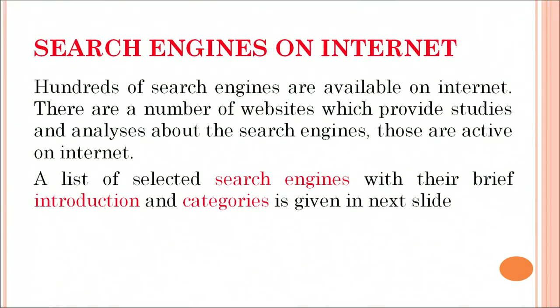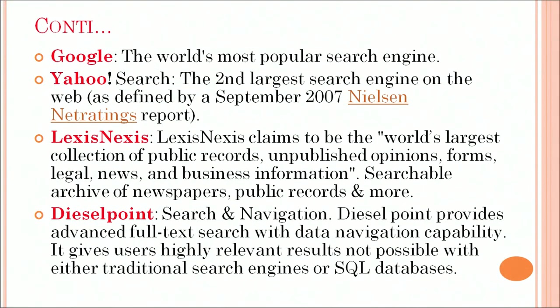Hundreds of search engines are available on the internet. There are a number of websites which provide studies and analyses about these search engines that are active on the internet. A list of selected search engines with their brief introduction and categories: Google is the world's most popular search engine. Yahoo is the second largest search engine on the web. LexisNexis claims to be the world's largest collection of public records, unpublished opinions, forms, legal news, business information, searchable archives of newspapers, public records and many more. Thistlepoint provides advanced full text search with data navigation capability and gives users highly relevant results not possible with traditional search engines.